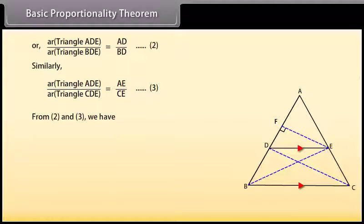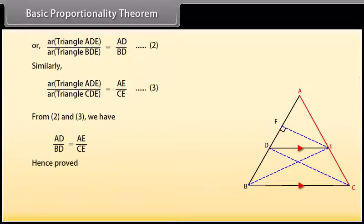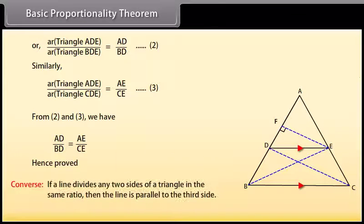From equations 2 and 3, we have AD upon BD equals AE upon EC, hence proved. The converse of this theorem is also true, which says that if a line divides any two sides of a triangle in the same ratio, then the line is parallel to the third side.